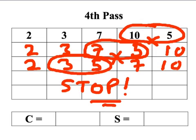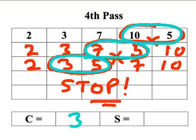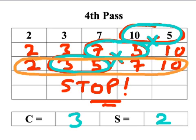Counting up the comparisons and swaps: I did three comparisons and two swaps. I've now sorted the list of numbers properly into ascending order. The final answer, which I'll circle, is: 2, 3, 5, 7, 10.